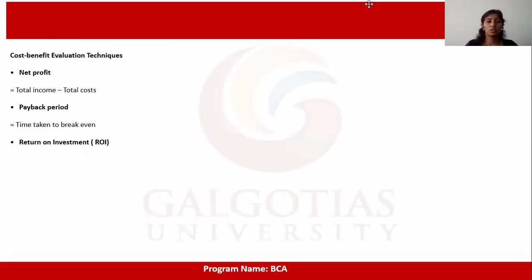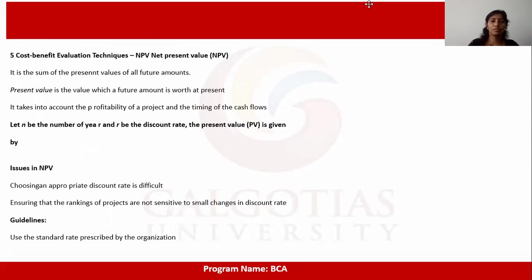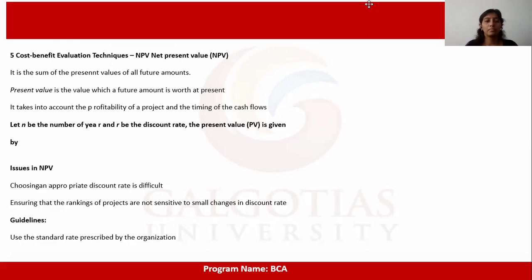The cost-benefit evaluation techniques include net profit and net present value (NPV). NPV is the sum of the present values of future amounts. The present value is what a future amount is worth today. It accounts for the profitability of a project and the timing of cash flows. Let n be the number of years and r be the discount rate — the present value PV is given by the NPV formula.